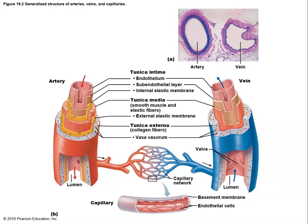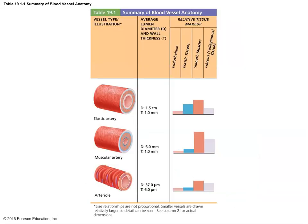Looking at cross-sectional drawings, arteries have a great deal of muscle while veins have a much thinner muscle layer, though their internal volume is about the same. The structural difference is the amount of muscle present. Arteries need more muscle to contain higher blood pressure, while veins have much lower blood pressure and therefore require far less muscle.